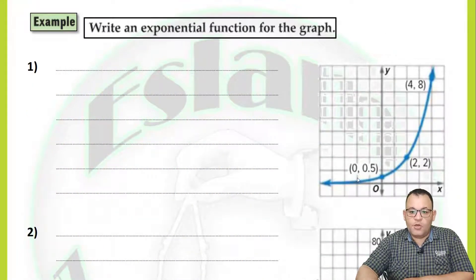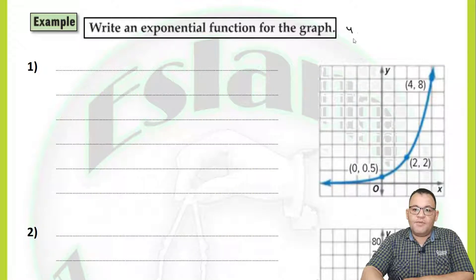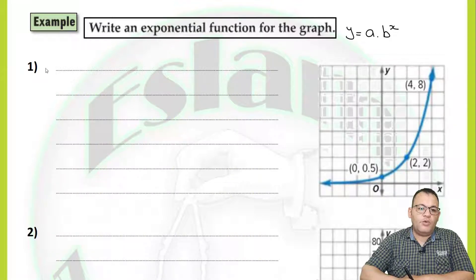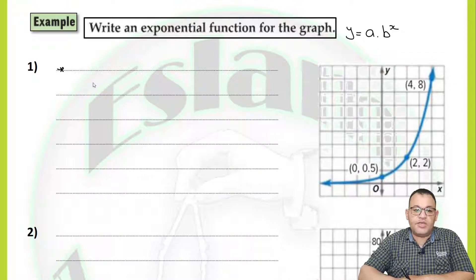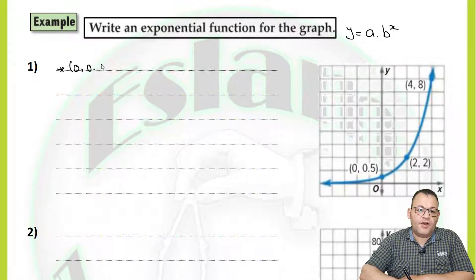We have three ordered pairs here: 0 and 0.5, 2 and 2, and 4 and 8. Step number one, we need to use the equation y equals a multiplied by b to the power x. We'll use the first point, the point which contains 0 — so we have (0, 0.5).